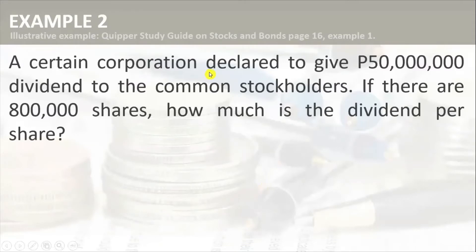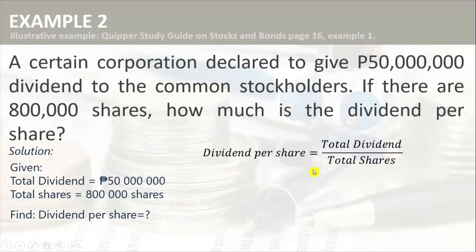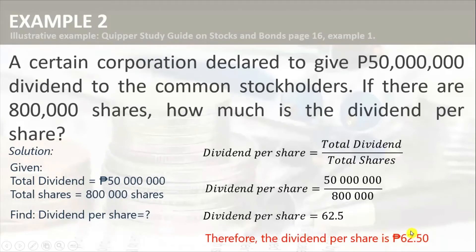A certain corporation declared a dividend of 50 million pesos to its common stockholders. If there are 800,000 shares, how much is the dividend per share? The total dividend is 50,000,000 pesos and the total shares are 800,000. Dividing the total dividend by the total shares gives 62.50. Therefore, the dividend per share is 62 pesos and 50 centavos. The more shares or stocks you have in this corporation, the more dividends you will receive.